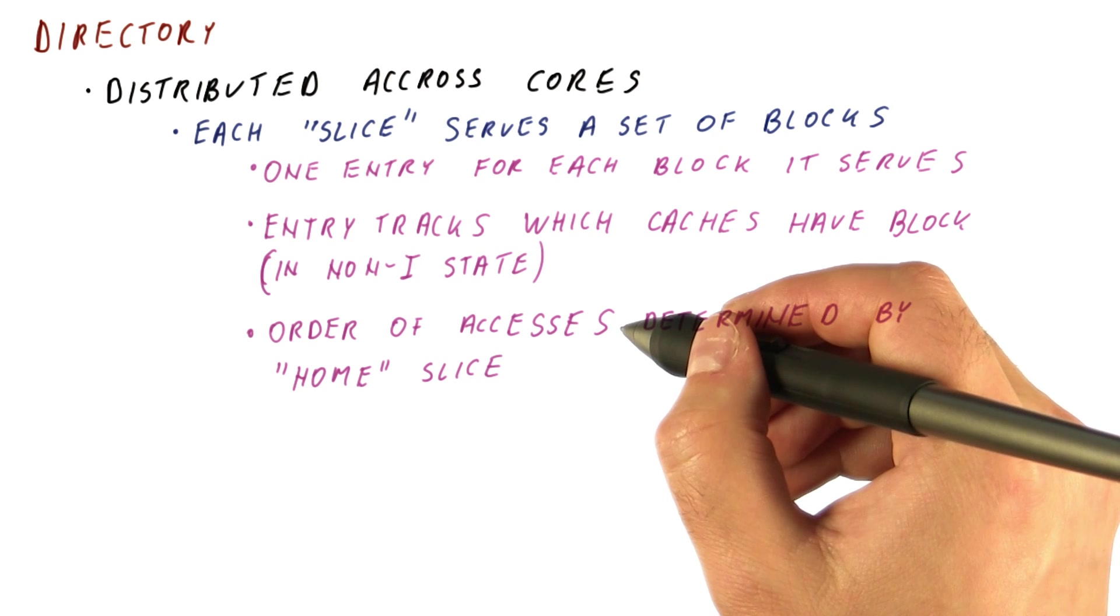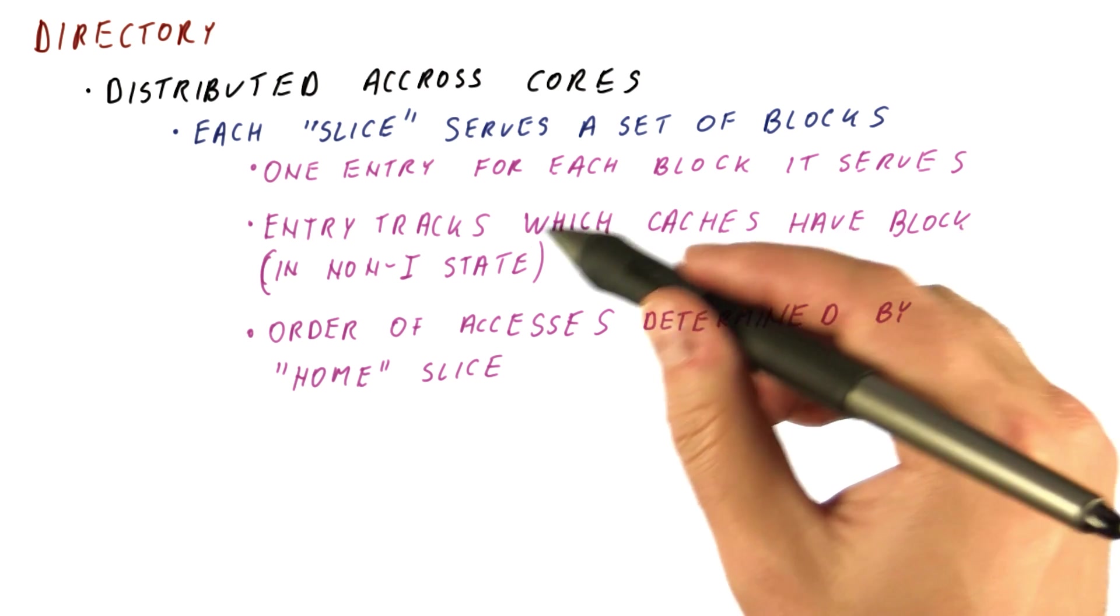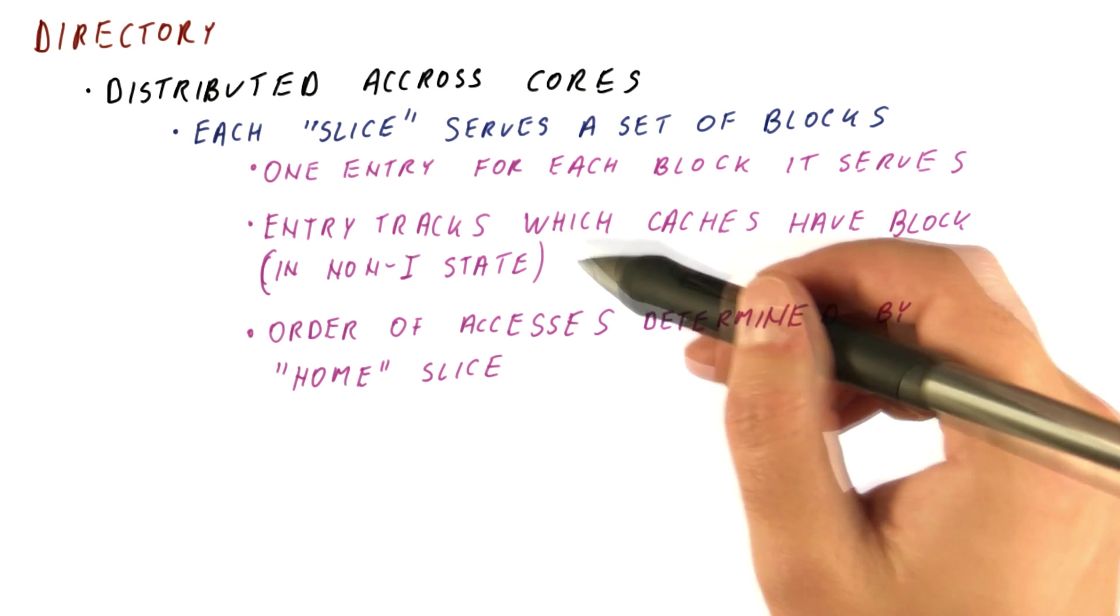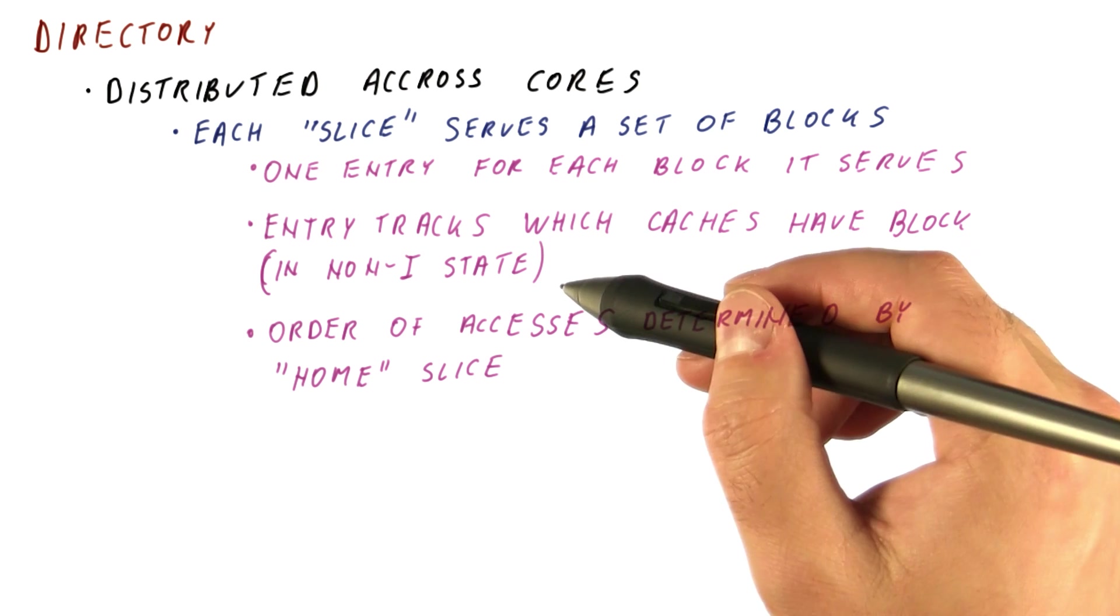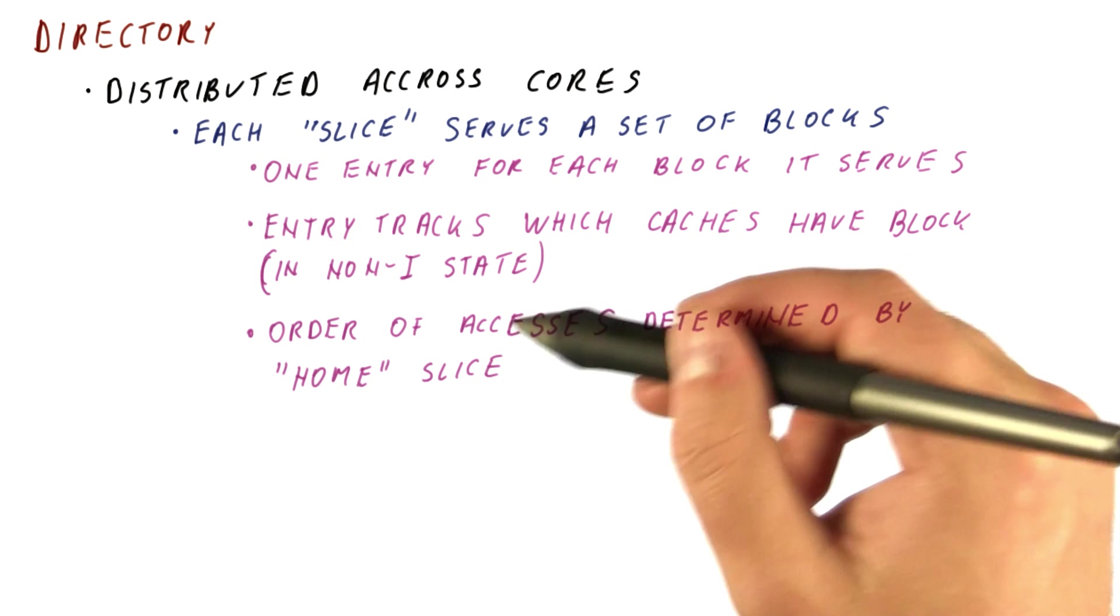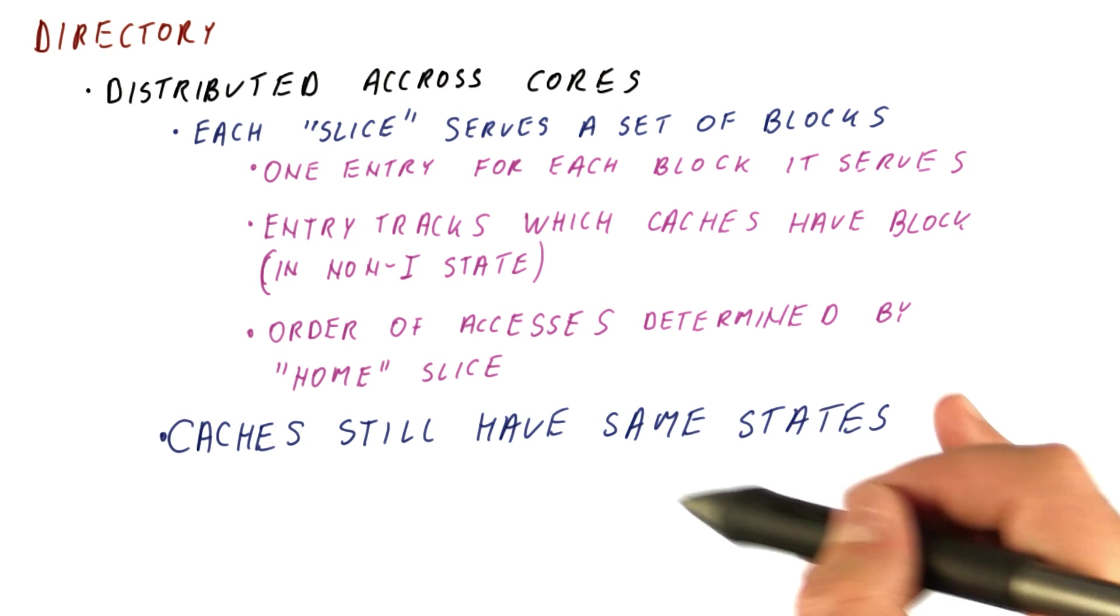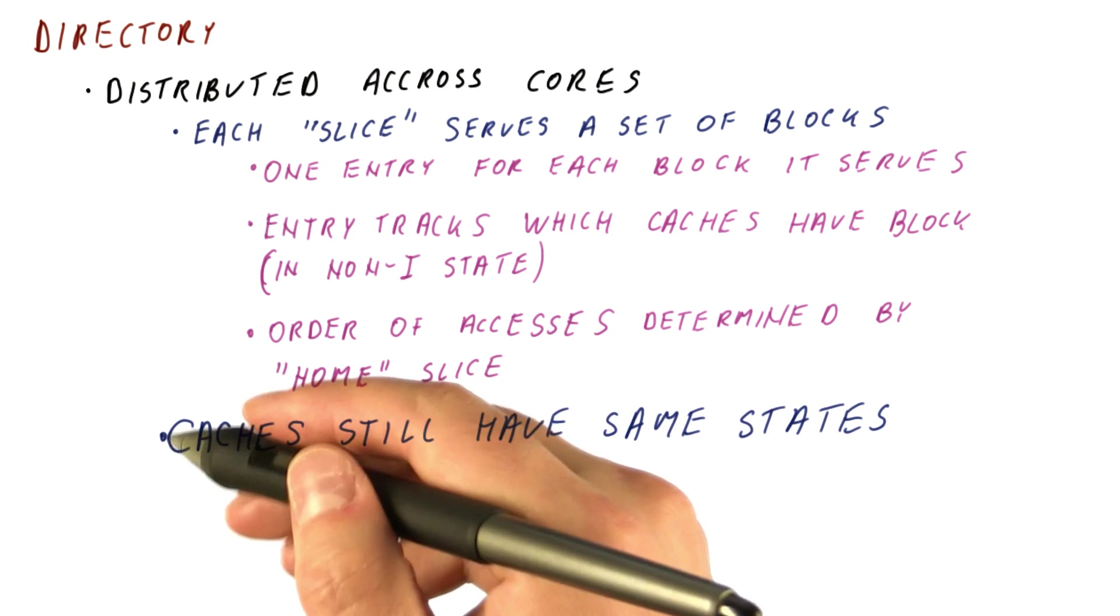So accesses that go to the same block are almost serialized in how they can access their entry, and the order in which that happens is the order in which the accesses are officially set to happen. Note that with the directory protocol, the caches still have the same states they did with snooping.